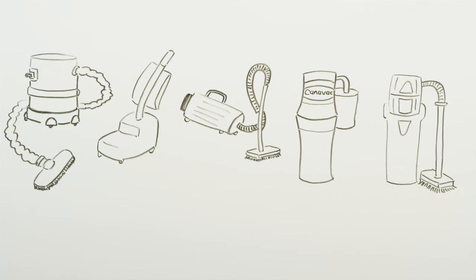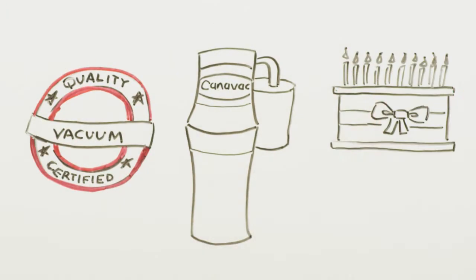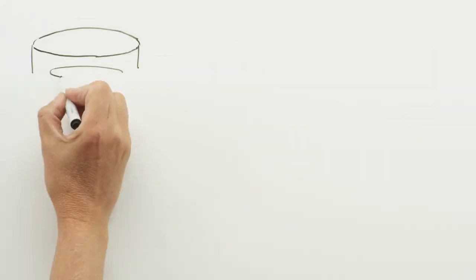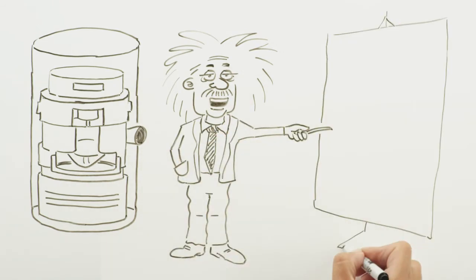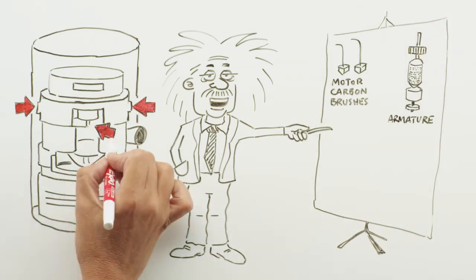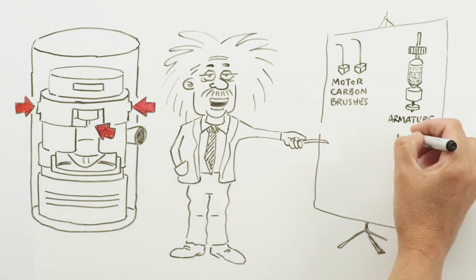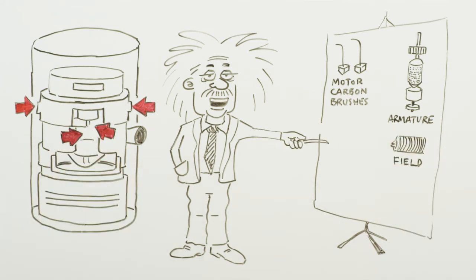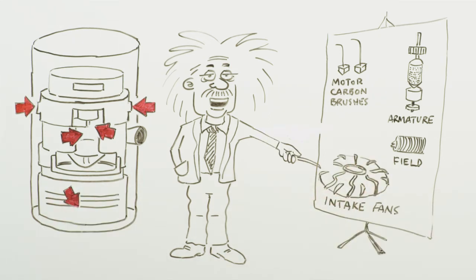There are many vacuum cleaner choices available, but the quality and longevity of each depends on the motor. A central vacuum motor consists of several parts. These include motor carbon brushes that conduct electrical current. The armature, which converts electrical power to mechanical torque. The field, which is the magnetic component of a motor. And the intake fans. Typically more intake fans, the greater the size, the greater the performance.